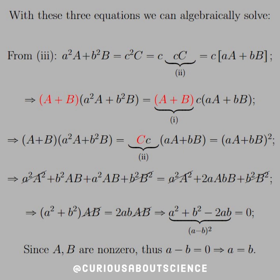Okay, so what we're really left with is little a times little a squared times big A, plus little b squared times big B, is equal to little c times little a times A, plus little b times big B.